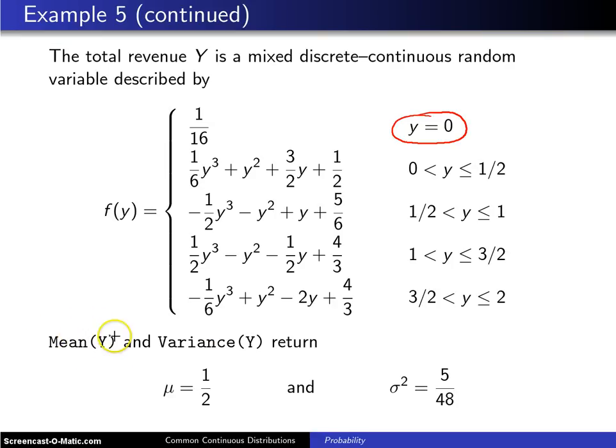If you then apply the mean function and the variance function in APPL, you will get one-half cent as his expected revenue. And you will get a variance of five-forty-eighths cents squared.